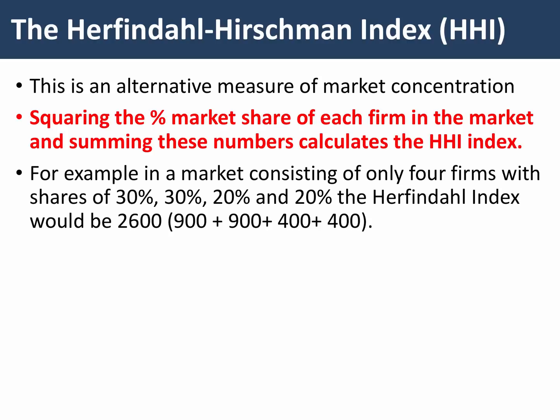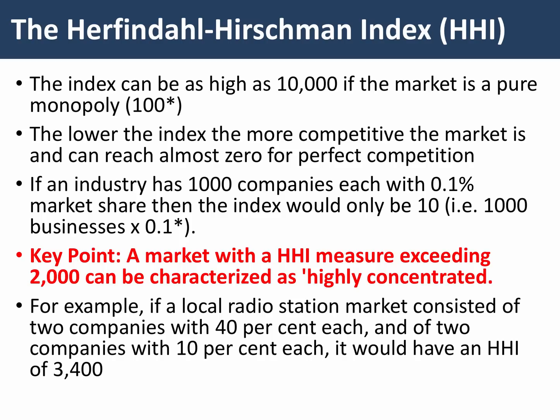Let's take a simple example: a market where there are only four firms with 100% of the market — 30, 30, 20, and 20. You square the percentage market share for each firm; the square of 30 is 900. Add them together and you get a total index of 2,600. The index could be as high as 10,000 — if the market is a pure monopoly with one firm at 100%, you square that. The lower the index, the more competitive or less monopolistic the industry. The index can reach almost zero for perfect competition — for example, 1,000 businesses each with 0.1% of the market would sum to just 10.